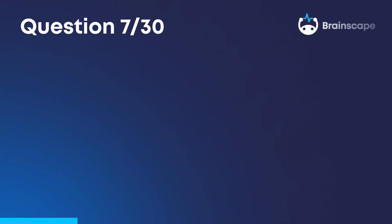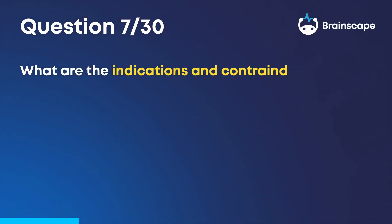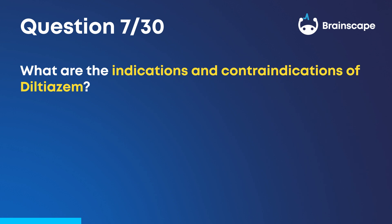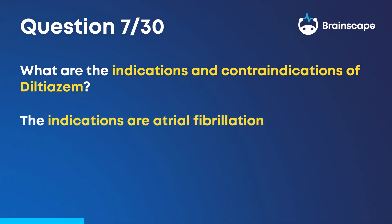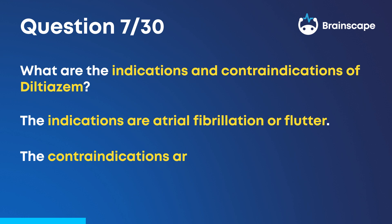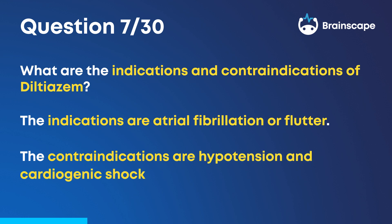Question 7. What are the indications and contraindications of diltiazem? The indications are atrial fibrillation or flutter. The contraindications are hypotension and cardiogenic shock.